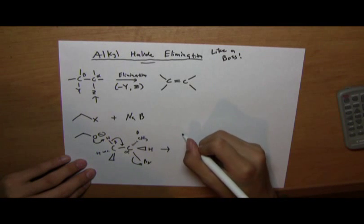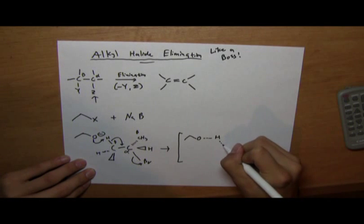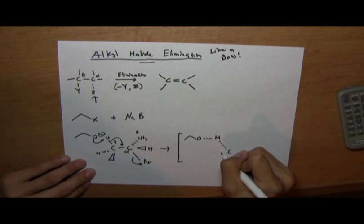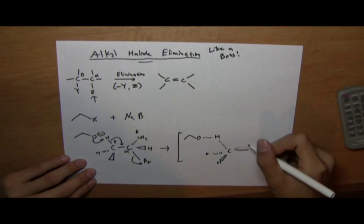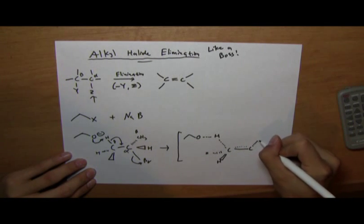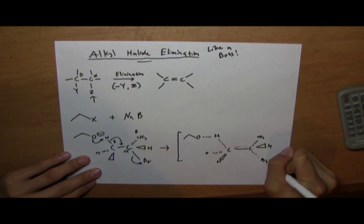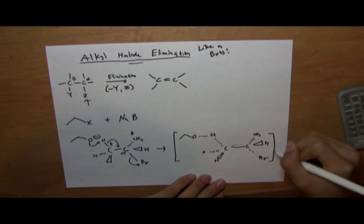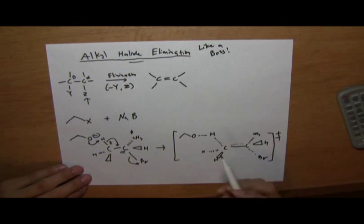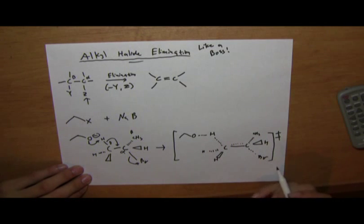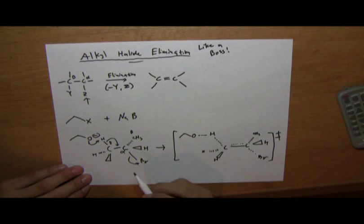So here's the transition state. This symbol indicates that it's a transition state. So all these dashed lines represent basically half bonds, or the process of which bonds are formed or removed. So the product is this.